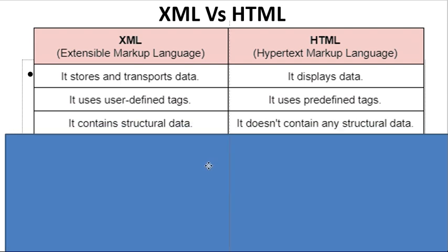The next difference is: XML contains structural data. When you are writing the information of a student, you need to structure the data — first you declare the root, then child, then sub-child. You need to maintain the hierarchy.